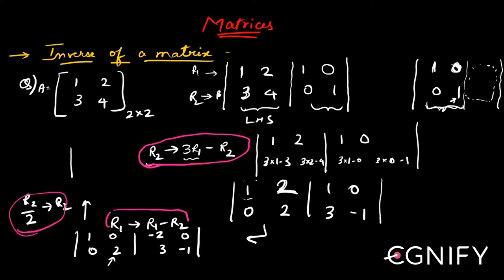With this, what you finally get is first row is as it is, and your second row becomes 0, r2 by 2 is 1, and this is 3 by 2, this is minus half. Now you have successfully created an identity matrix on this side, so that I can say inverse exists as far as this problem is concerned, and this particular matrix, these 4 elements, they themselves are your inverse.